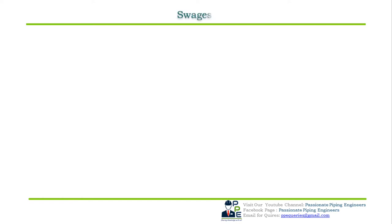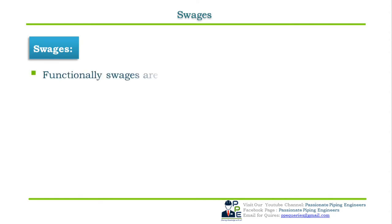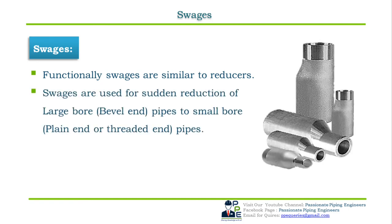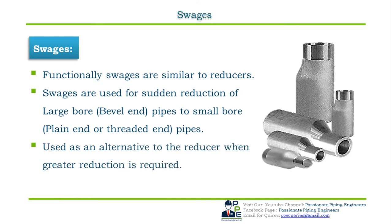The next fitting used for joining two different pipe sizes is the swedge (or swedge nipple). Like reducers, swedges are used for reducing line sizes, but reducers have limitations: reductions are available only up to half of the larger diameter. Swedges are used for sudden reduction in line sizes — joining large bore or beveled-ended pipe to small bore plain-ended or threaded pipe. They are an alternative to reducers when greater reductions are required.